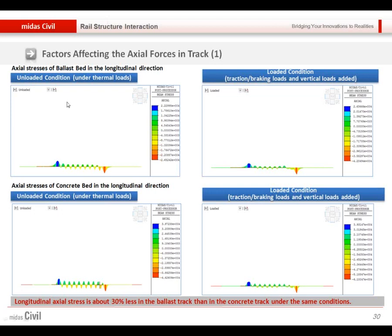As you know, the ballast stiffness is different under the thermal load and under the train load. And by changing this, the changes of the ballast stiffness, we can see the different axial stress. Very large difference will occur.